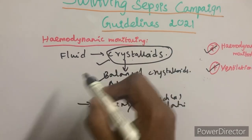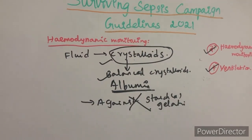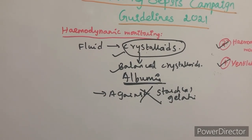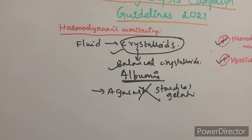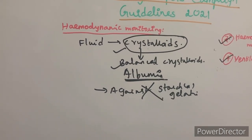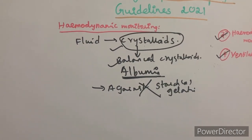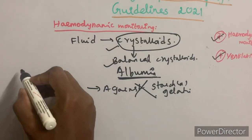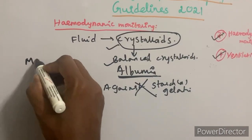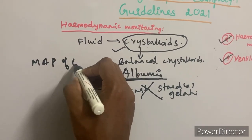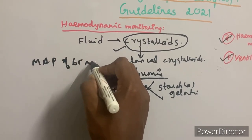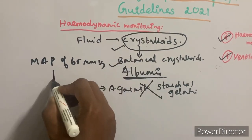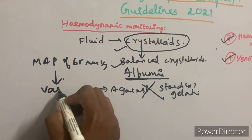If the patient has hypotension and you have given adequate fluids but cannot achieve a target MAP of 65 mmHg, the next step is to initiate vasopressors.